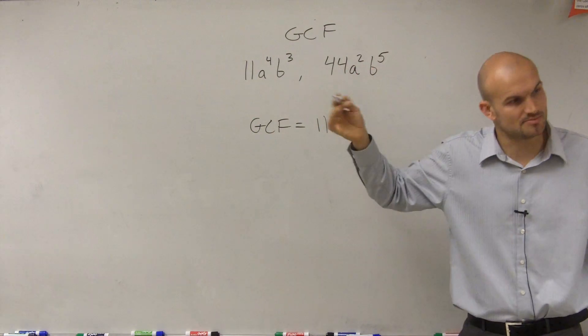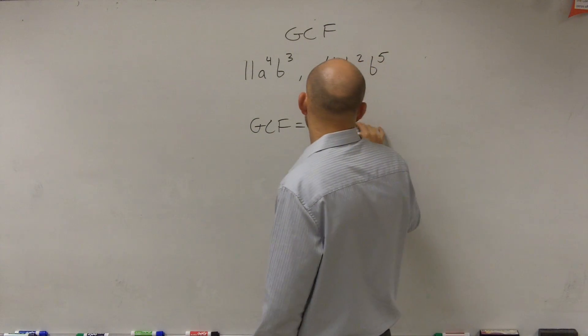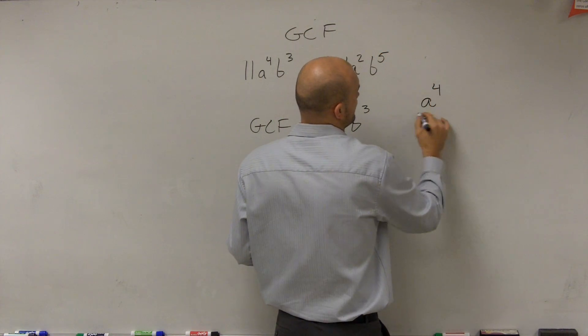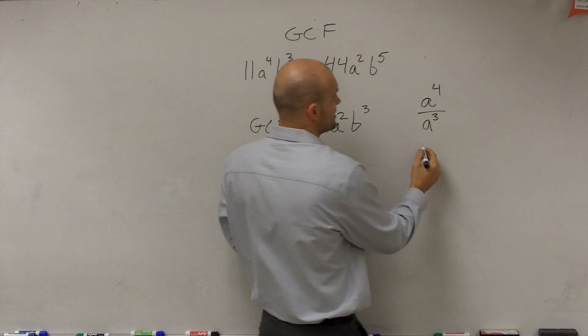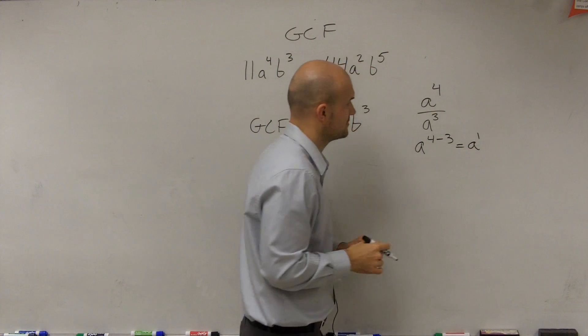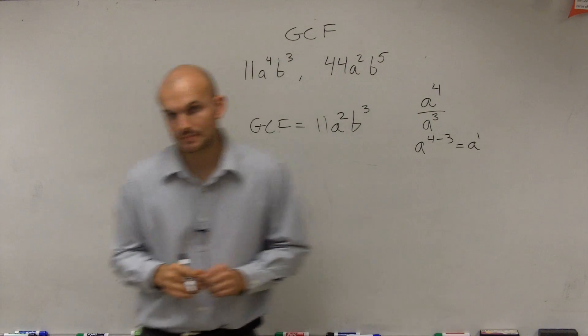Then we look at the b's and the largest. Remember, a to the fourth divided by a cubed, the power rule of exponents is a to the four minus three, which equals a to the first.